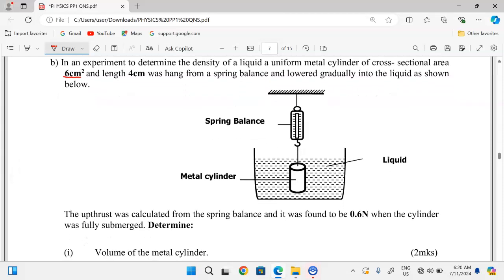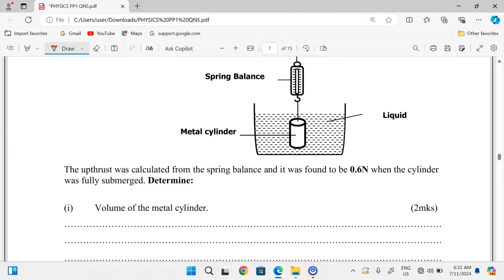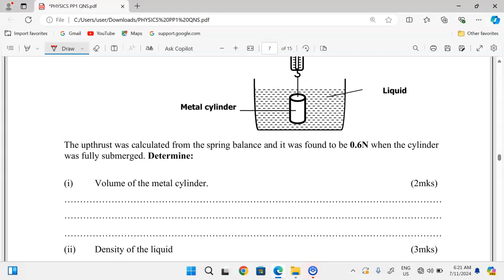So we got the diagram here: this is the spring balance, this is the metal cylinder being submerged or lowered into the liquid gradually. The question says the upthrust was calculated from the spring balance and it was found to be 0.6 newtons when the cylinder was fully submerged.